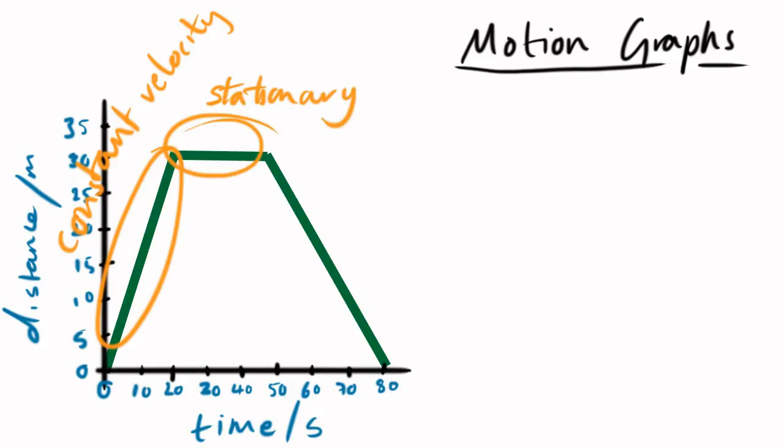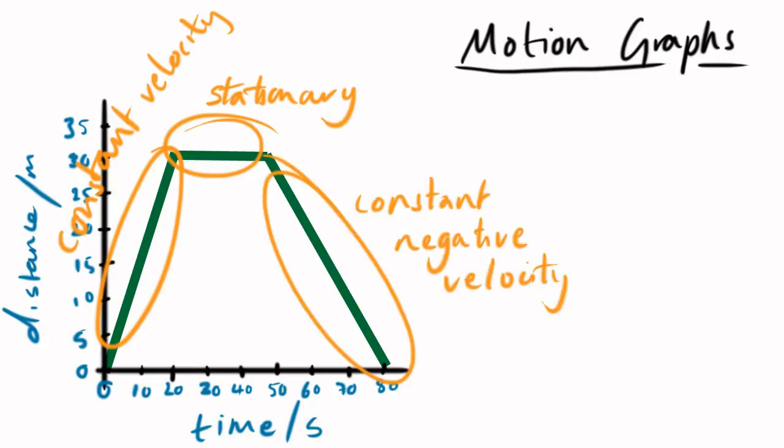The flat section at the top, that object is stationary. Its distance hasn't changed as time has gone on, therefore it's not moving, it's got no speed. And then the downward sloping part, the straight line downwards, is a constant but negative velocity, so it's going backwards, it's going back from where it came.